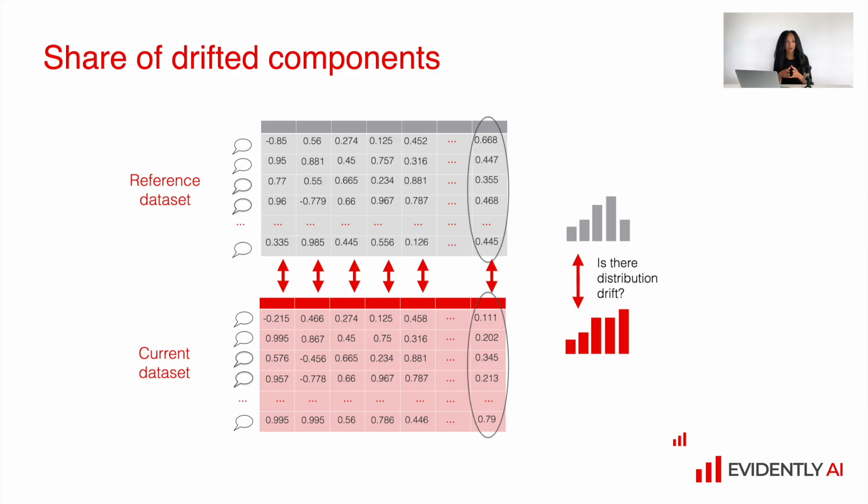In this case, we will assess drift size or drift score for each individual component, and then we will need to come up with some aggregative statistics to combine information from all these individual components altogether. The most straightforward things are number of drifted components or share of drifted components. And here I don't really recommend you to try to derive hypotheses from individual component drifts, especially if you have very high dimensional space. Rather use some aggregative statistics, because it's much more convenient and just makes more sense.